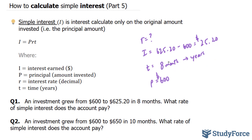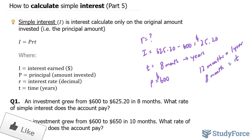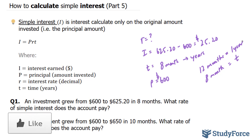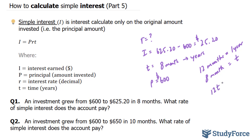The first thing we have to do is convert 8 months into years. We know there are 12 months in 1 year, so we set up a simple ratio: 12 over 8 equals 1 over t. That gives us 12t = 8, so t = 8/12, which is equivalent to 2/3.